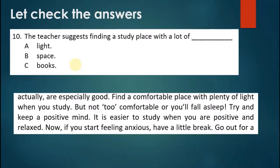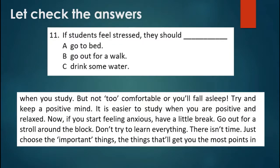Question 10: the teacher suggests finding a study place with a lot of what? From the transcript: 'find a comfortable place with plenty of light when you study.' It is clear the teacher recommends a place with a lot of light. The answer for question 10 is A. Question 11: if the student feels stressed, they should do what? The transcript says 'if you start feeling anxious, have a little break, go out for a stroll around the block.' A stroll means a walk. The answer for question 11 is B — go out for a walk.